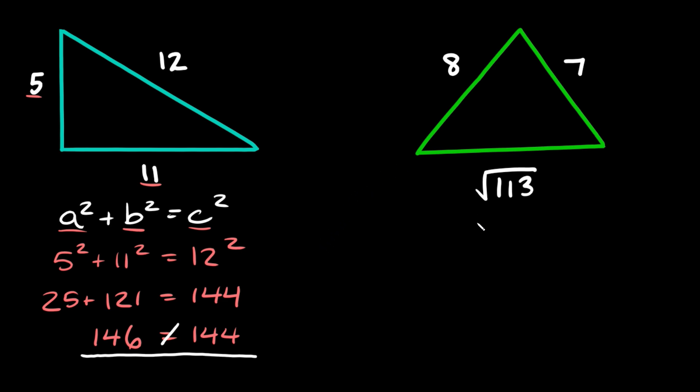Let's try one more here. So the three sides we have are 8, 7, and the square root of 113. So again we just need to plug these in to the Pythagorean theorem: a² + b² = c².